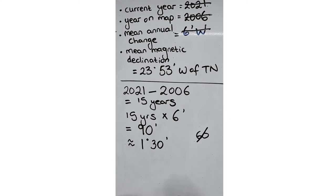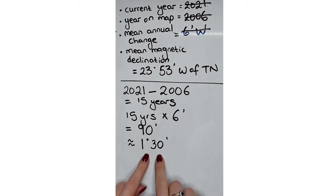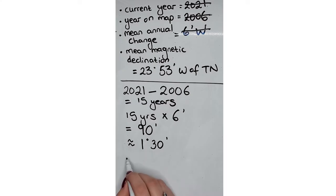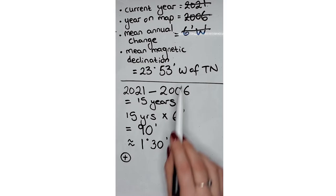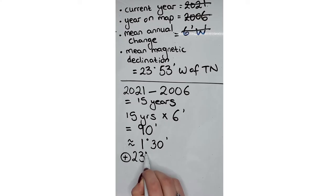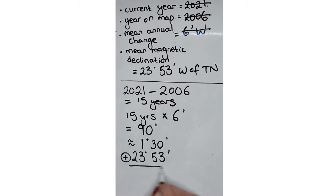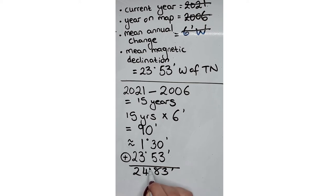Now we are not finished — we still need to add this to our mean magnetic declination from the map. So we line everything up: 23 degrees and 53 minutes plus our one degree and 30 minutes that we converted earlier. This gives us an answer of 24 degrees and 83 minutes.